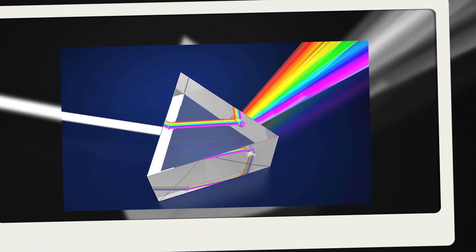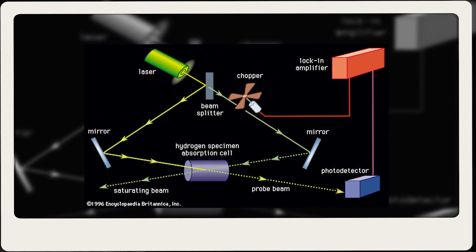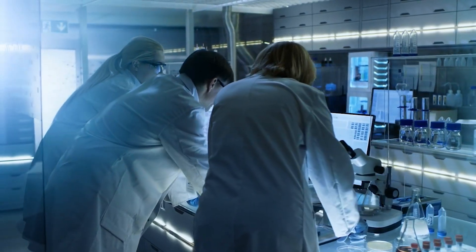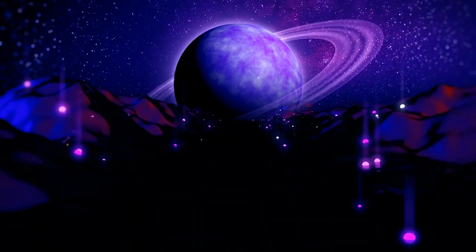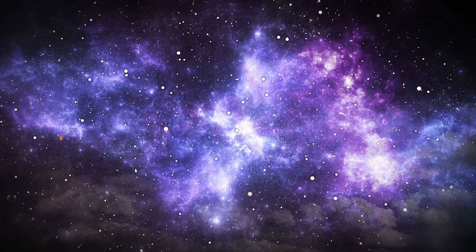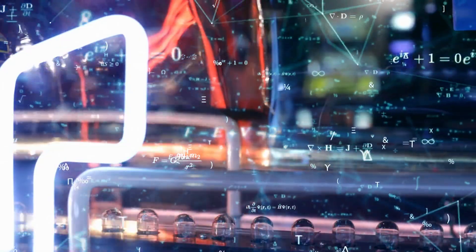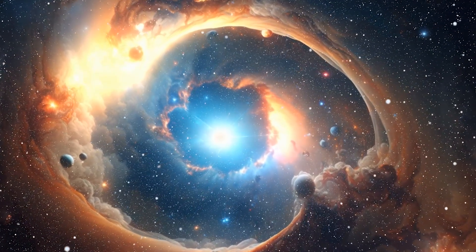Spectroscopy, the study of how matter interacts with light, uses this property to identify elements even from great distances. By observing the colors of light that an element emits or absorbs, scientists can determine its composition. This is how astronomers discover what distant stars and planets are made of. The light reaching Earth from across the galaxy passes through a prism or diffraction grating, splitting into a spectrum of colors. Each dark or bright line in that spectrum corresponds to a specific element. The same physics behind a glowing tube of neon gas also allows humanity to read the chemical signature of the universe itself.